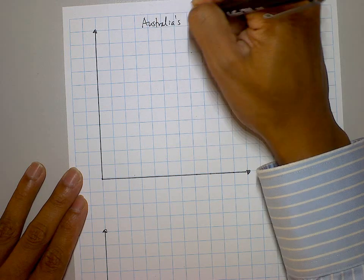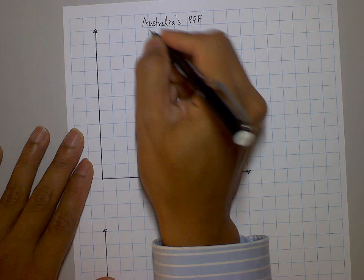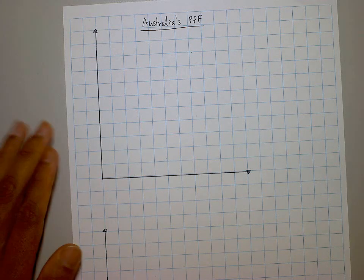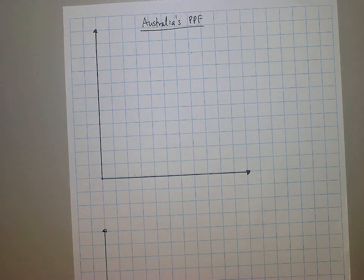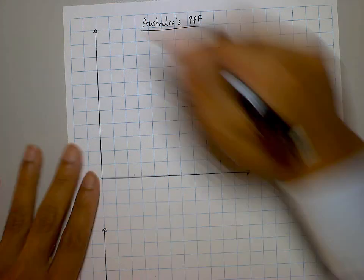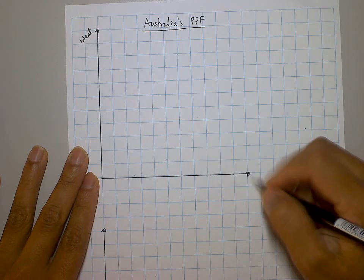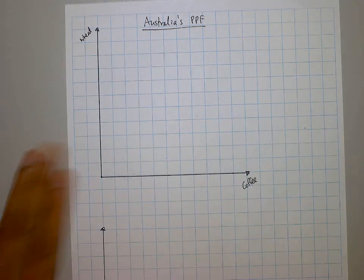Australia has a PPF and we're going to use the table to draw that. Whenever you're drawing graphs, three things you need to include in terms of labels: the title and the axes. We're going to put wheat on the y-axis and coffee on the x-axis.